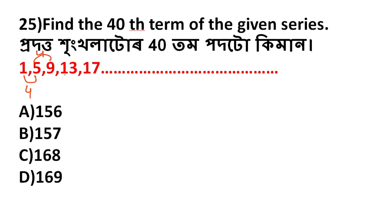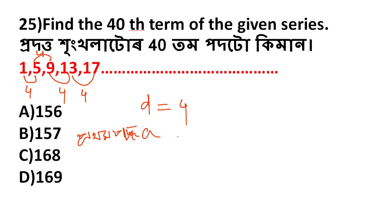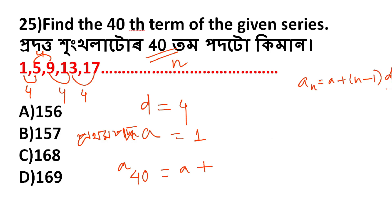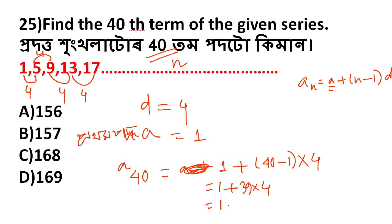Next question involves an arithmetic progression. The differences are: 9−5=4, 13−9=4, 17−13=4. The common difference d = 4. The first term a = 5. Using the formula for the nth term: aₙ = a + (n−1)×d, for n = 40: a₄₀ = 5 + (40−1)×4 = 5 + 39×4 = 5 + 156 = 161. Wait — 1 + 156 = 157. The answer is 157, option B is correct.